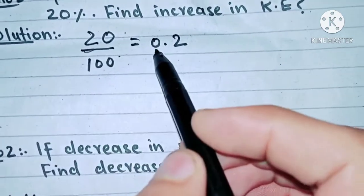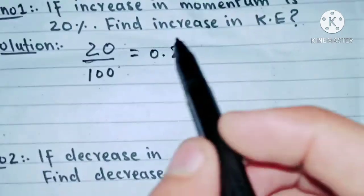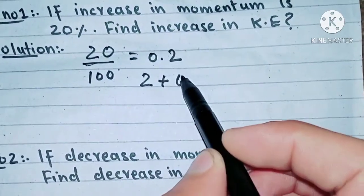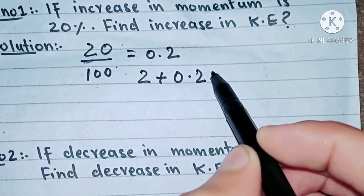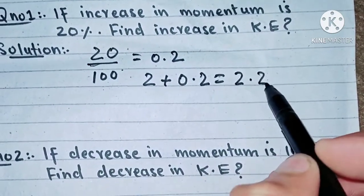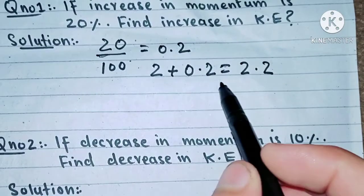You will have to add 0.2 with 2, like 2 plus 0.2 equals 2.2.